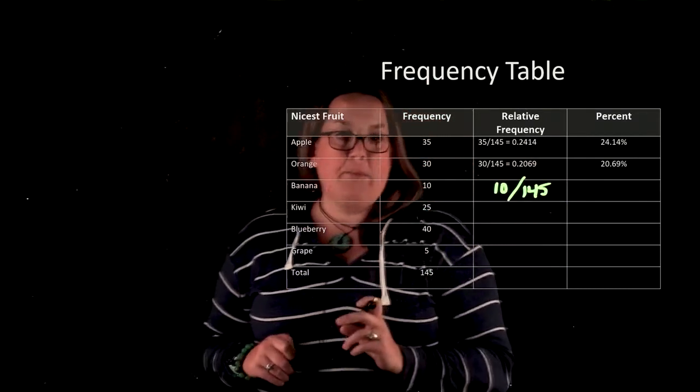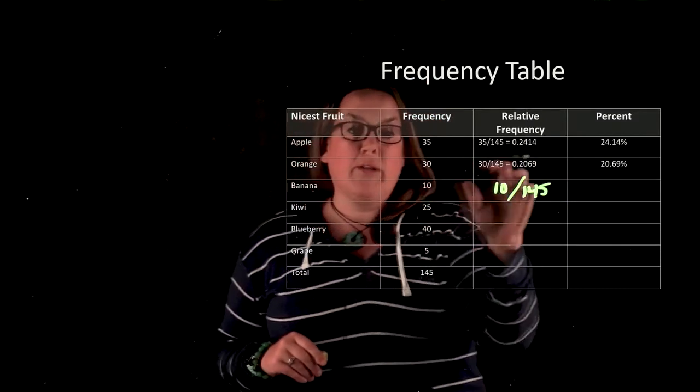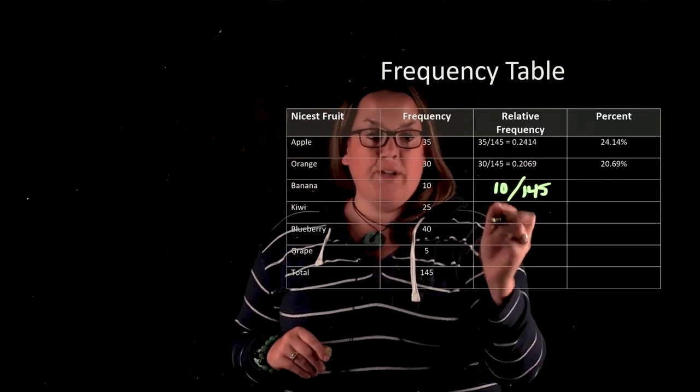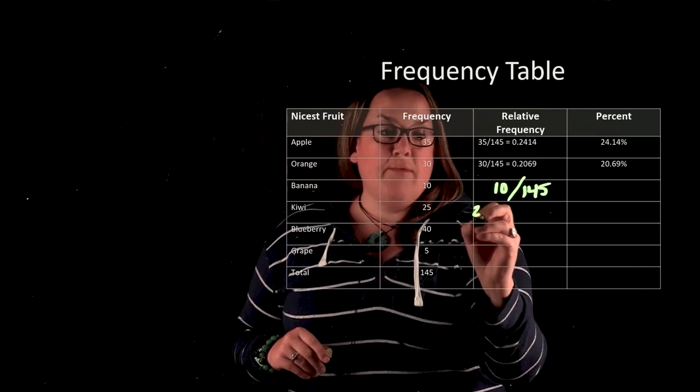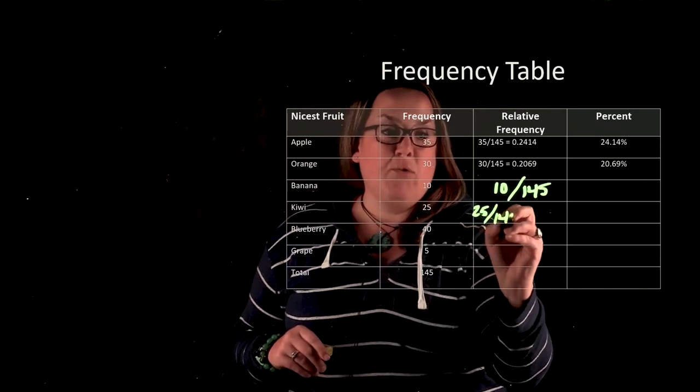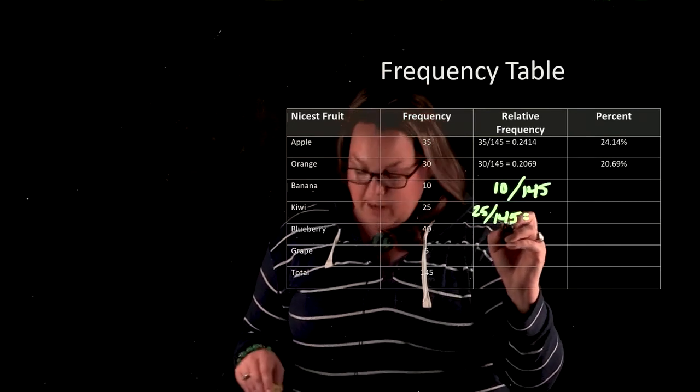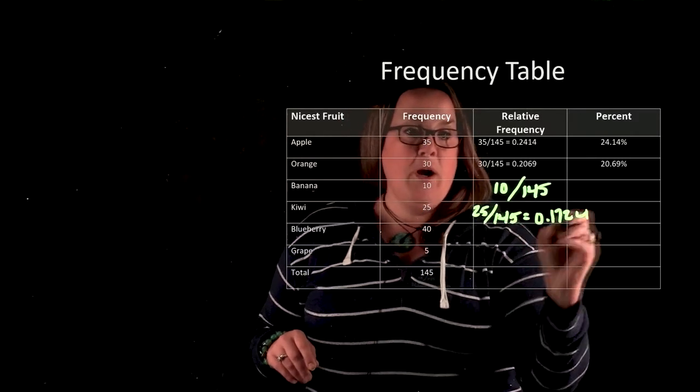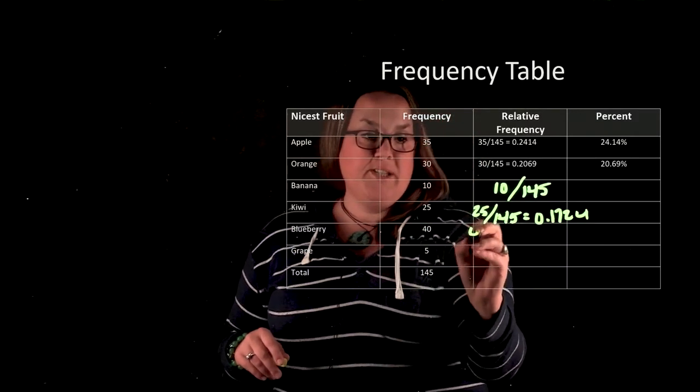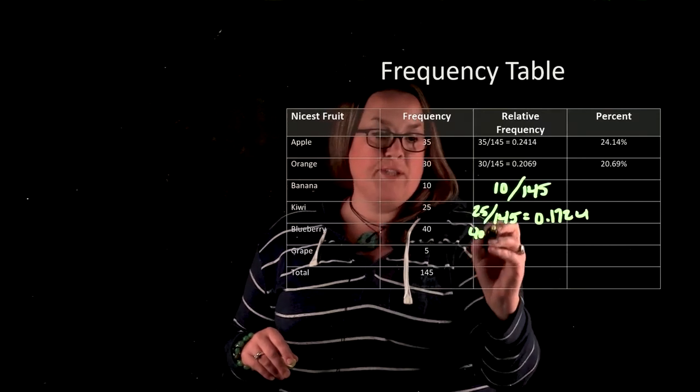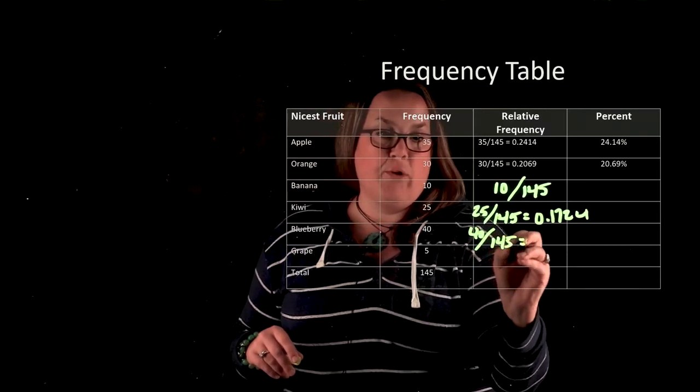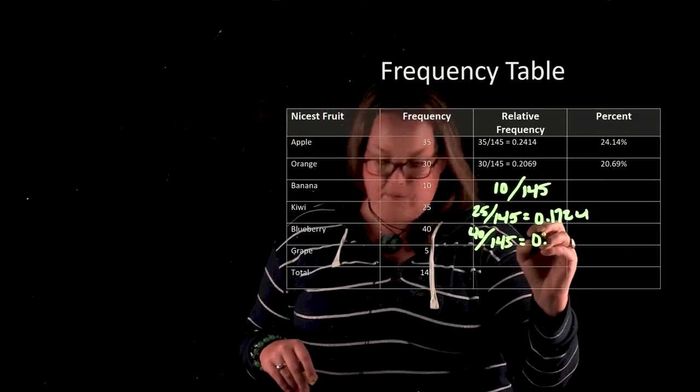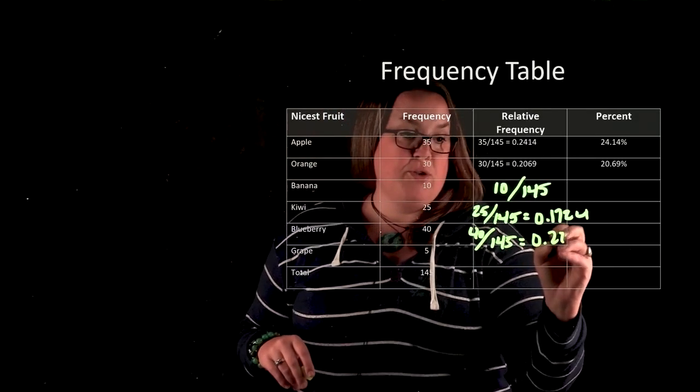You can see in the cells above that I actually calculated it all the way out to a decimal value. You can have it as a fraction or a decimal. Here we have 25 out of the 145, so I could carry that out to the decimal value which would be 0.1724. Then I have blueberries, so 40 that's the frequency relative to the total of 145, and again if I carried it out to a decimal value and did that division I would come up with 0.2759.